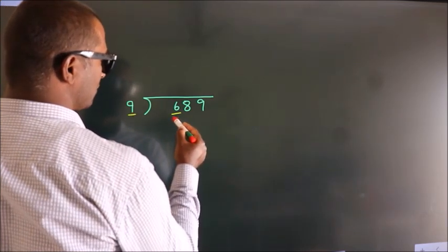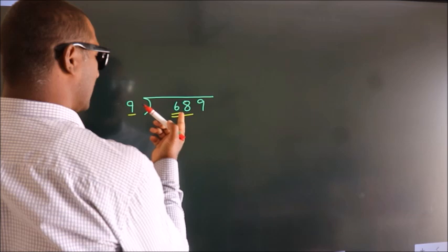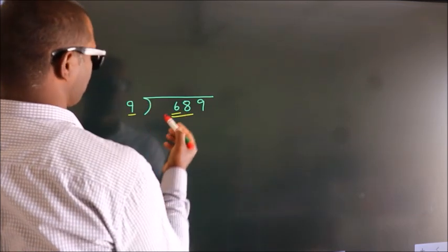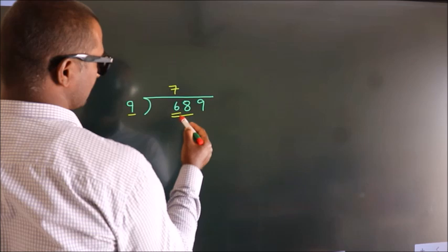So we should take two numbers, 68. A number close to 68 in the 9 table is 9 times 7, which is 63.